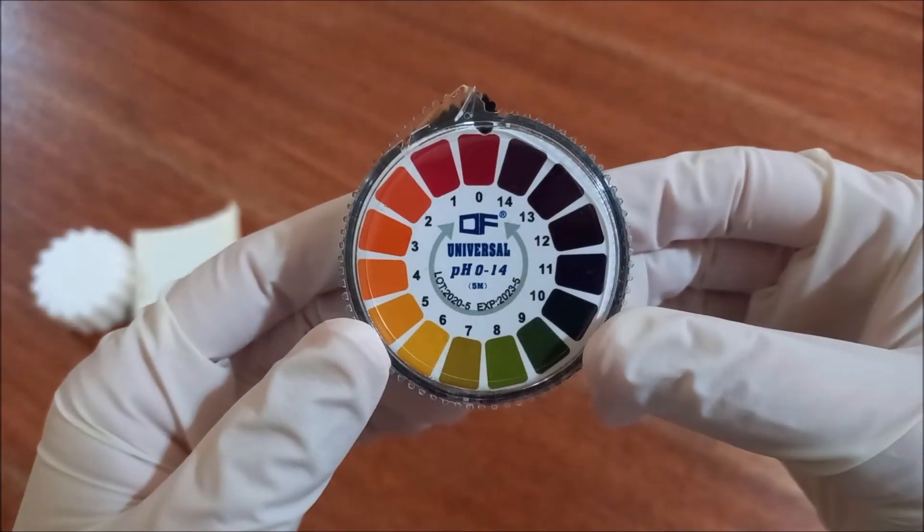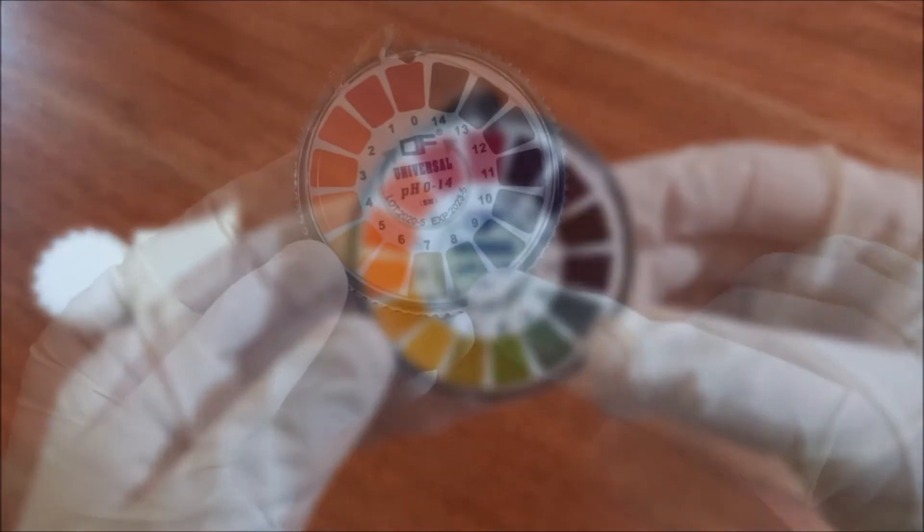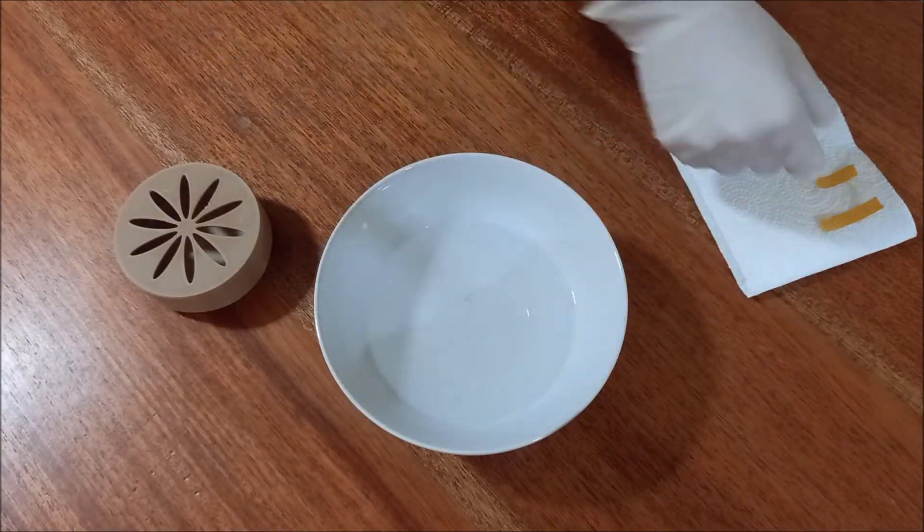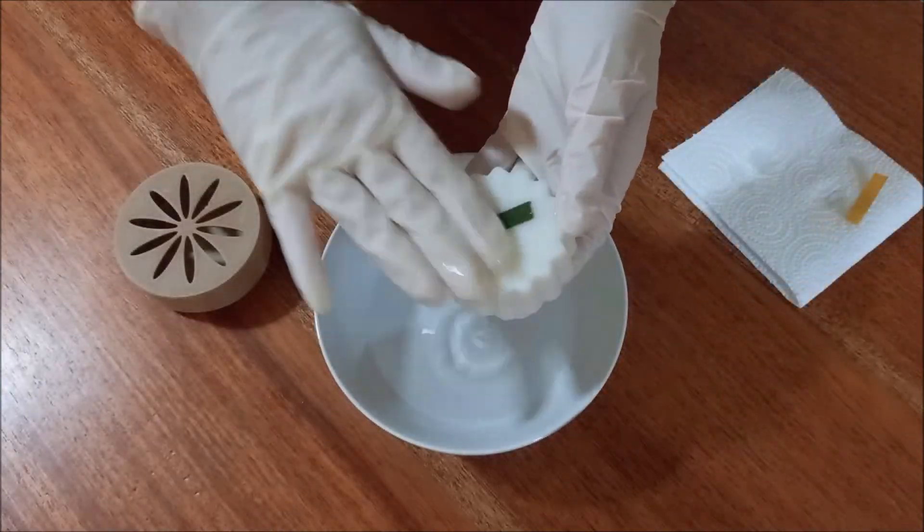Cold process soap is alkaline and the pH varies between 8 and 10. During the curing process, pH strips can be used to know if more time is needed to cure.